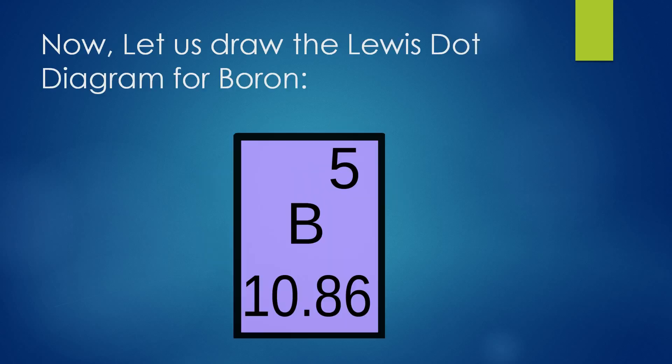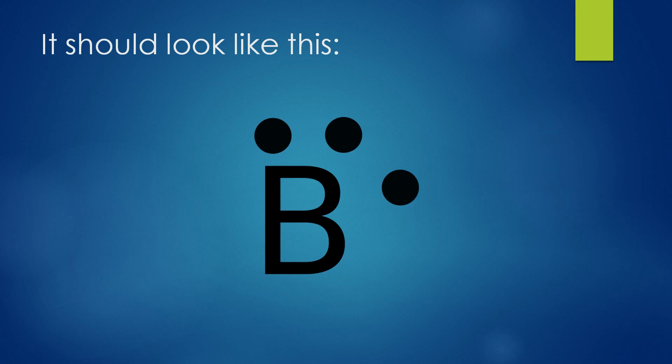Now let us draw the Lewis dot diagram for boron. Boron's atomic number is 5, which means it has three electrons in the outermost shell. So the Lewis dot diagram for boron should look like this.